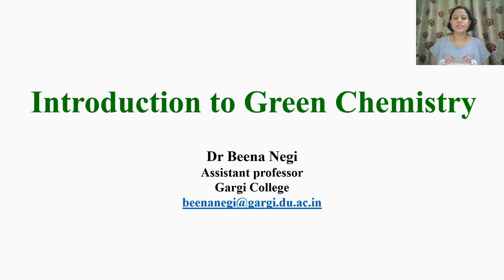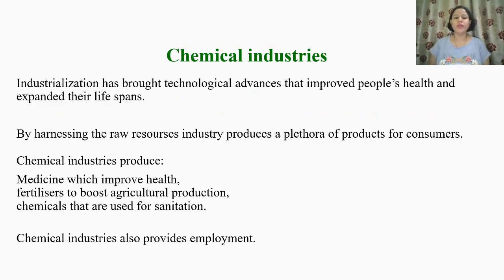We will also discuss the 12 principles of green chemistry. Let us begin with the importance of chemical industries. We all know that industrialization has brought technological advances that improved people's health and expanded their lifespan. By harnessing the raw resources, industry produces a number of products for consumers. Some of the benefits of industries are they provide us medicine which improves health, fertilizers to boost agricultural production, chemicals used for sanitation, and employment.